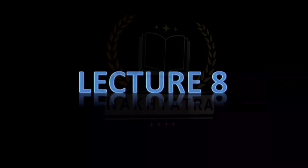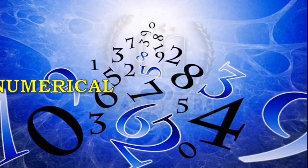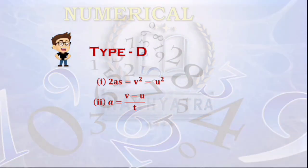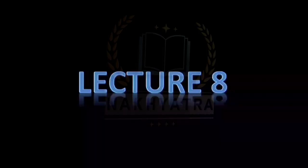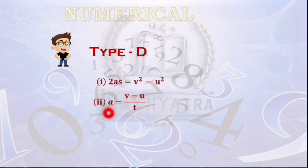Hello class 9 students, I hope everyone is studying. This is our lecture number 8 of the chapter motion. Here we will be solving the numericals based on acceleration and equation of motion. These numericals are of type D and the formulas we will be using are: 2aS = v² - u² (the third kinematical equation) and a = (v - u)/t for finding out the acceleration.